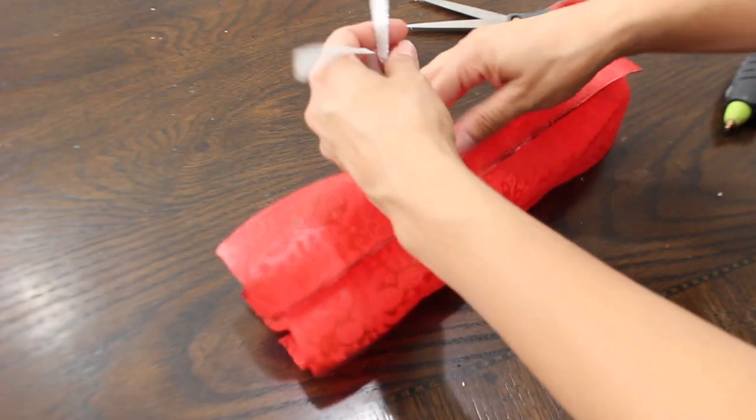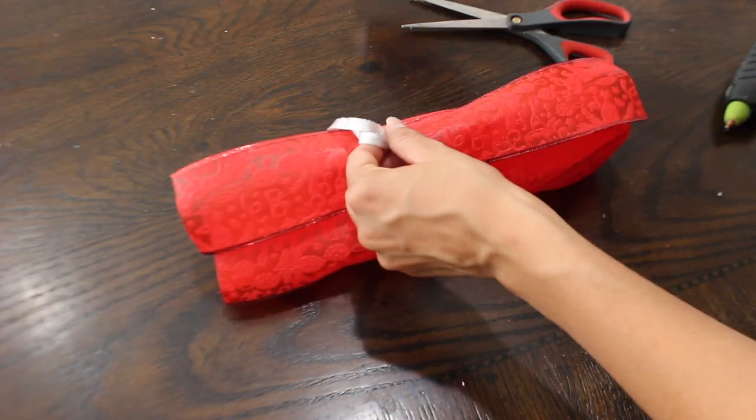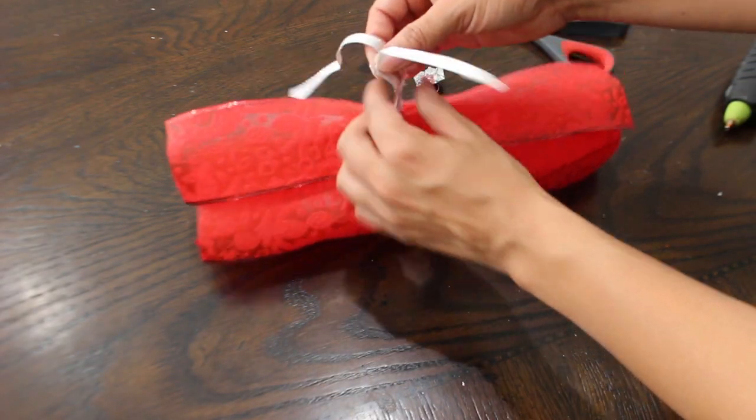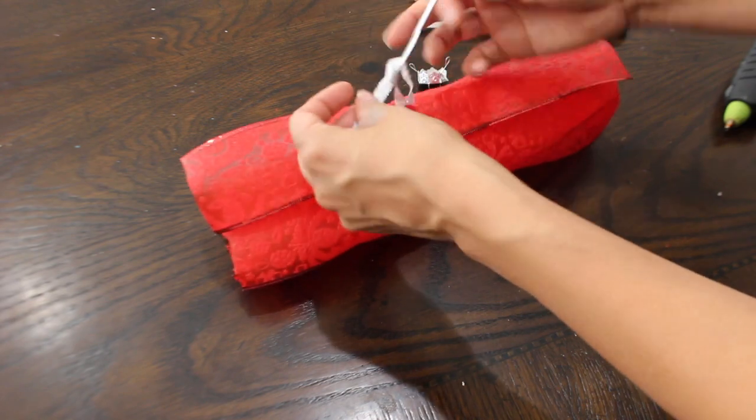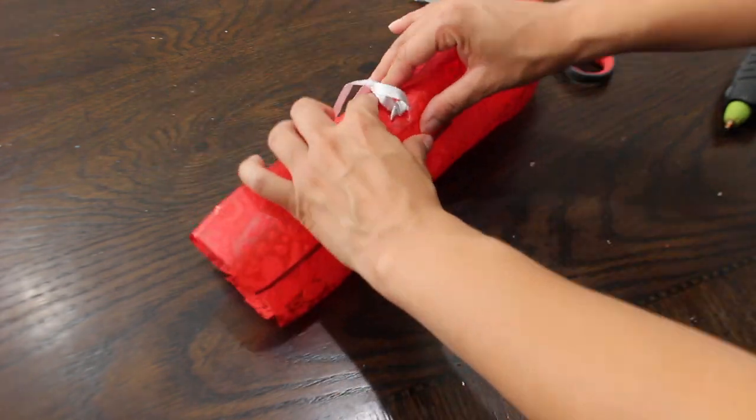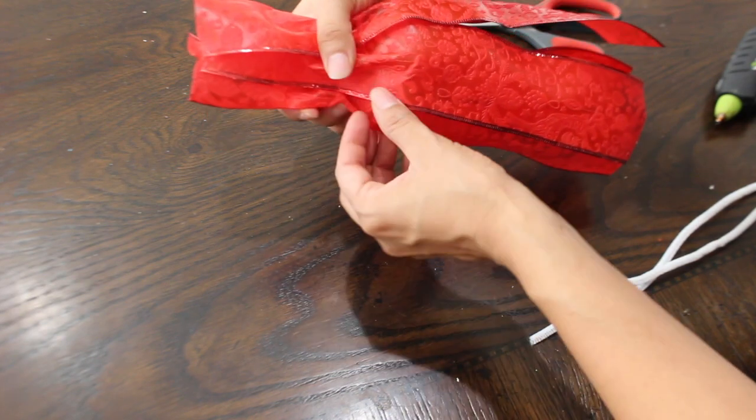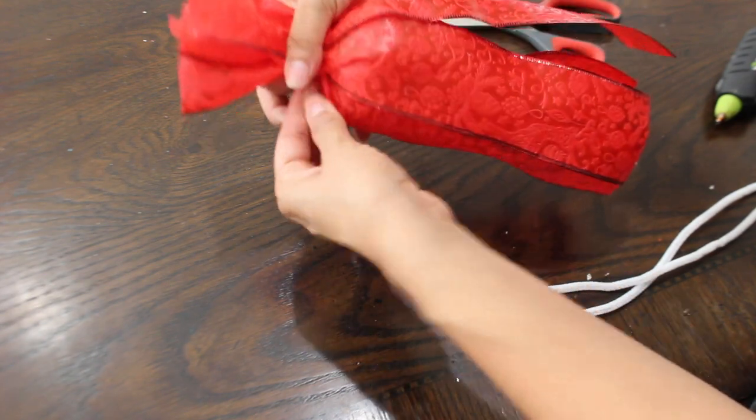I went ahead and cut a little hole at the top where this was at and added the string so I can hang it, to tie the ends so it looks like it's wrapped like a piece of candy.